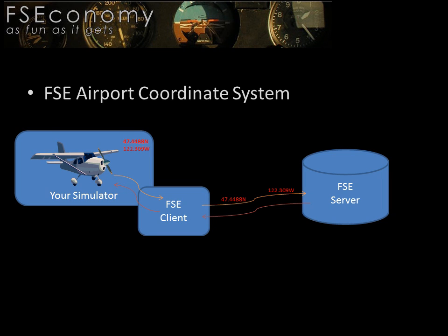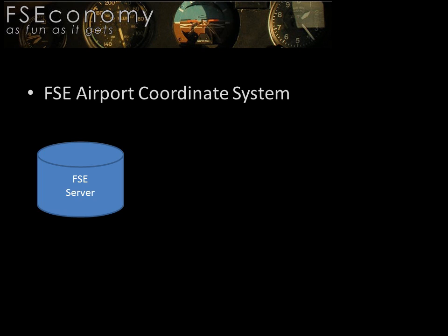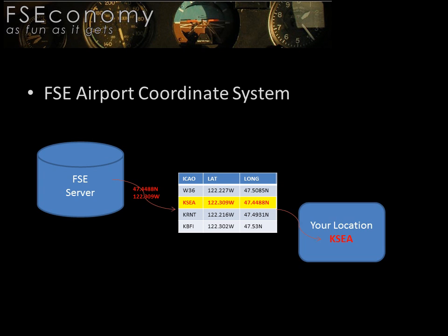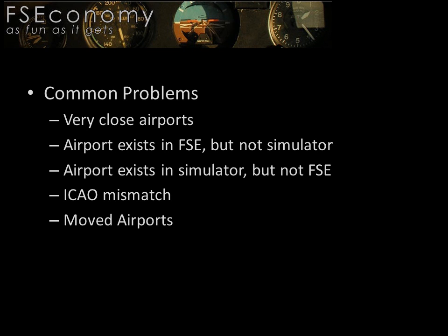Your simulator communicates with the FSE server by sending the coordinates of your aircraft's location through the client and over the internet. Other information such as the ICAO code or whether you are even at an airport are not communicated to the server. The FSE server receives the coordinates and determines your FSE location by finding the closest FSE airport within the FSE database to your simulator's transmitted coordinates.